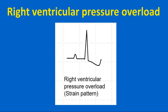Right ventricular pressure overload manifests as tall R waves in V1 and deep S waves in V5 and V6. In addition, there may be right axis deviation of QRS. When there is right axis deviation, deep S waves are noted in lead 1. Right ventricular pressure overload is seen in pulmonary stenosis and pulmonary hypertension.